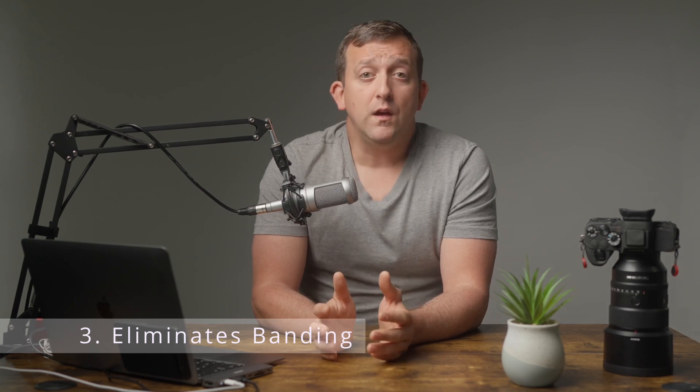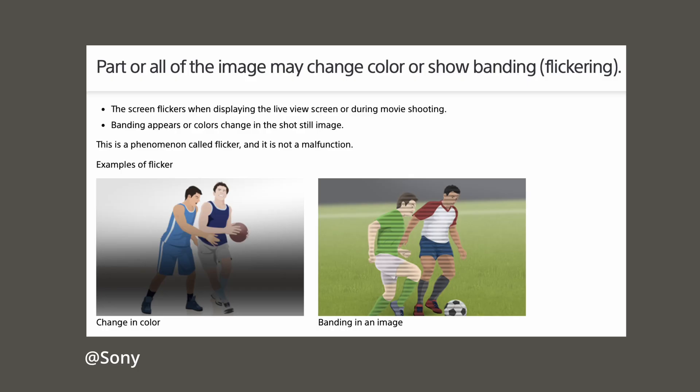The next big reason a global shutter is awesome is because it can eliminate banding. Banding tends to be more of an issue when shooting indoors, because certain types of LED or fluorescent lighting pulsate light at a high frequency. Depending on that frequency, the light can come in and out during your exposure and cause bands of different amounts of light in your image. That can be really problematic in, say, indoor sports photography. When you go to a global shutter, since it simultaneously exposes the entire sensor, it eliminates banding.